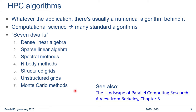The seven dwarfs are: dense linear algebra — dealing with matrices or multidimensional structures; sparse linear algebra — matrices in which most entries are zero; spectral methods such as Fourier transformations to solve differential equations; N-body methods; structured grids; unstructured grids; and Monte Carlo methods. The larger part of these dwarfs will be covered by examples shown in this lecture.